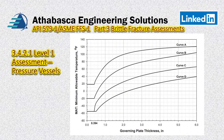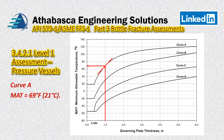Looking at the governing plate thickness of one inch, determined in the earlier steps, we go up to Curve A and then read across. From Curve A, the MAT is 69 degrees Fahrenheit, which is really quite high, or 21 degrees Celsius. This is where our minimum allowable temperature sits — not great news, so let's continue to see if there's something else we can do.